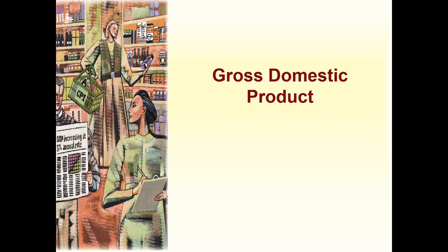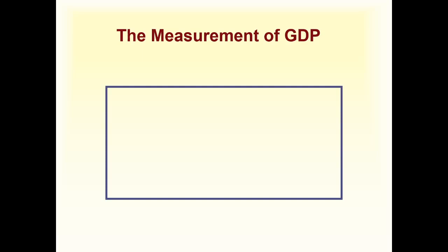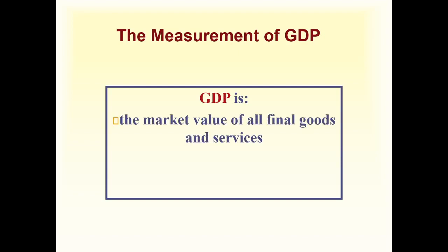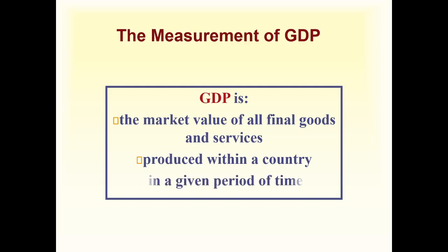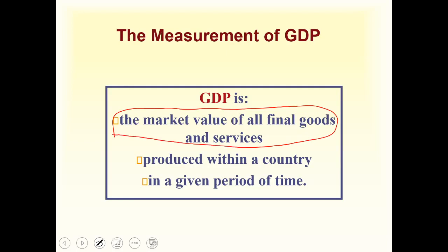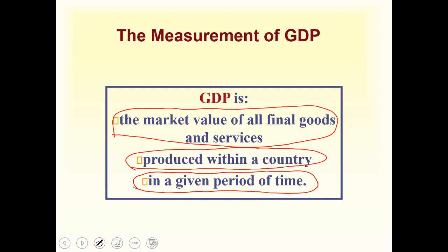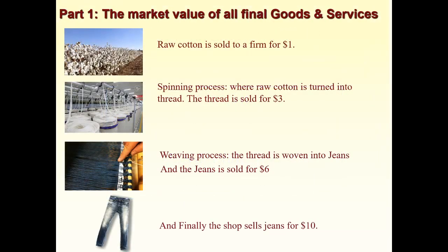Gross Domestic Product is normally called GDP. The definition is: GDP is the market value of all final goods and services produced within a country in a given period of time. We will divide this definition into three parts: first, the market value of all final goods and services; second, produced within a country; and third, in a given period of time.